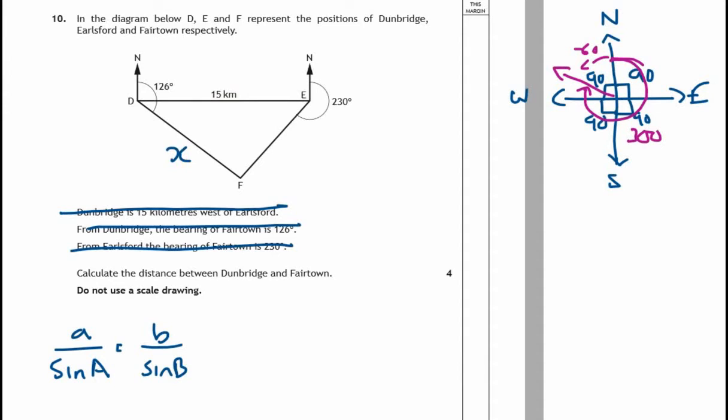What are the angles then? And how do we know that? Well, like I just said, everything is perpendicular. That is 90 degrees because it said that Dunbridge is 15 kilometers west. So we know that's a straight line, it's definitely 90 degrees. So this is going to be 36 degrees.